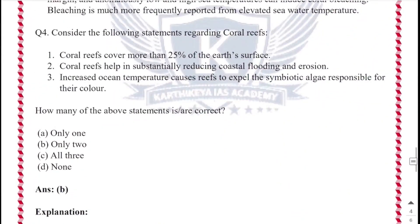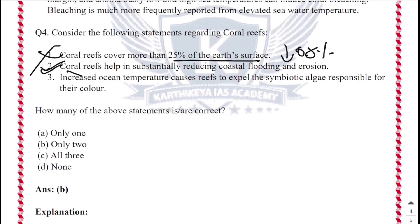Question 4: Consider the following statements regarding coral reefs. Statement 1: Coral reefs cover more than 25% of the earth's surface. This is not correct because coral reefs cover only less than 0.5% of the earth's surface. Statement 2: Coral reefs help in sustainably reducing coastal flooding and erosion. This statement is correct because coral reefs absorb 97% of wave energy and act like low-cost breakwaters, helping to reduce coastal flooding and erosion.